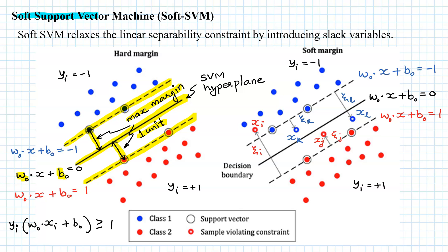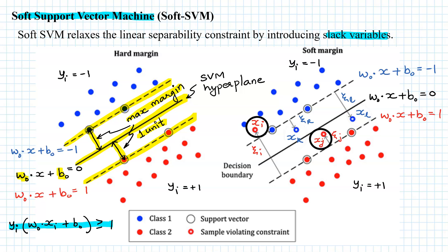Soft SVM relaxes this hard linear separability constraint by introducing slack variables. The slack variable measures the extent of violation of the linear separability constraint by individual data points. For example, these two blue data points and two red data points violate our linear separability constraint, and the slack variables ξᵢ measure the extent of that violation for each data point.